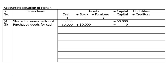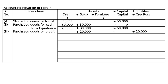Third transaction: purchased goods on credit. Add these transactions to find the new equation: cash rupees 20,000, stock rupees 30,000, and capital rupees 50,000 — LHS equals 50,000. For the third transaction, stock will increase on the asset side, and since we are buying on credit, creditors will also increase.